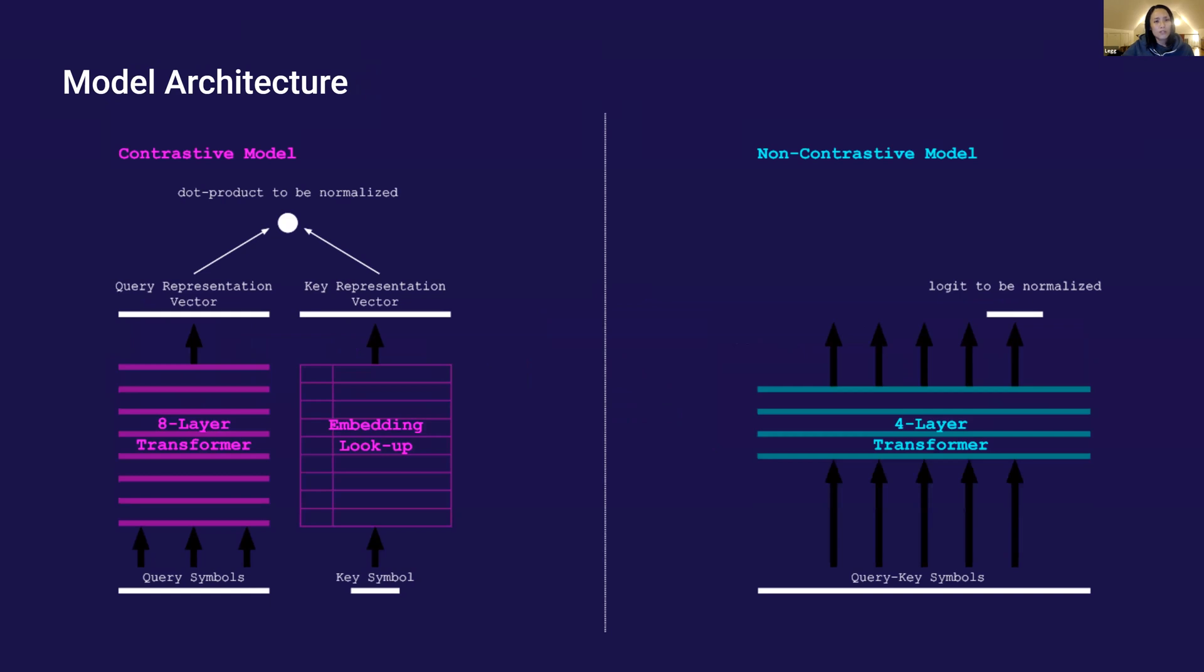The contrastive model uses an eight layer transformer to encode the query symbols and an embedding lookup to encode the key symbols, while the non-contrastive model uses a four layer transformer to encode the concatenated query key symbols. The contrastive model has 17 million parameters, while the non-contrastive model has only half of that.